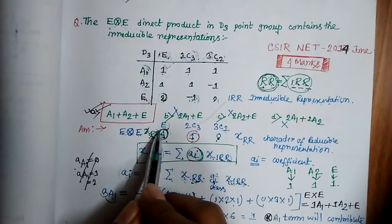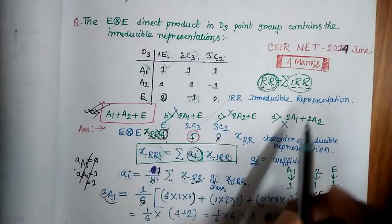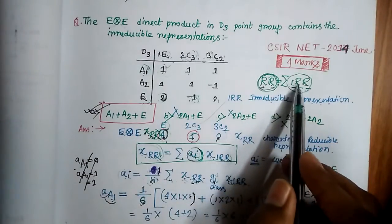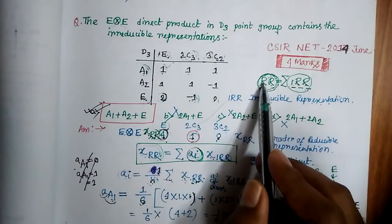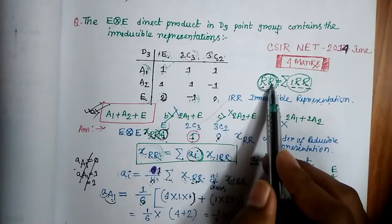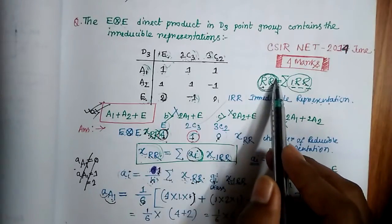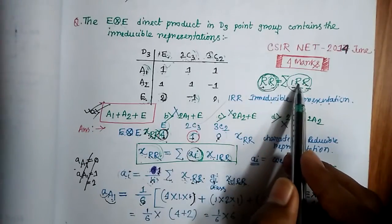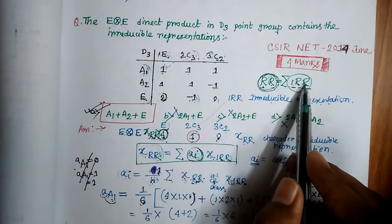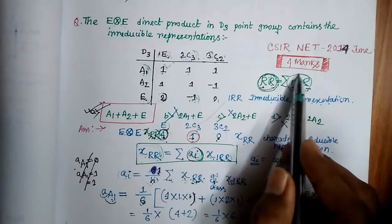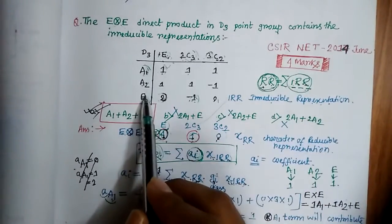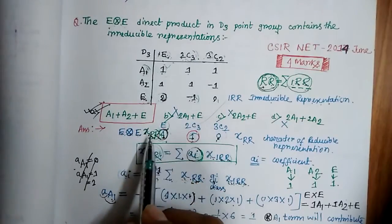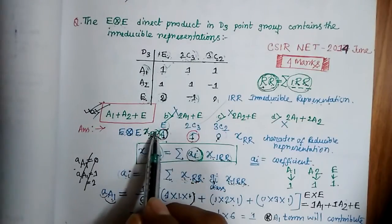Reducible representations can be reduced further, but irreducible representations cannot be reduced further — they are the unique representations obtained from the character table. Your first duty is to get the characters of the reducible representation.